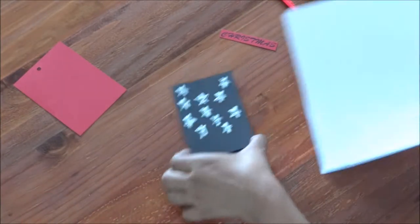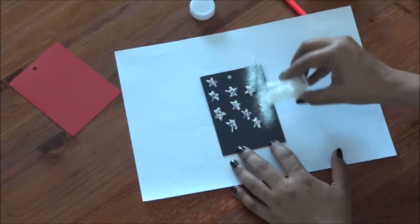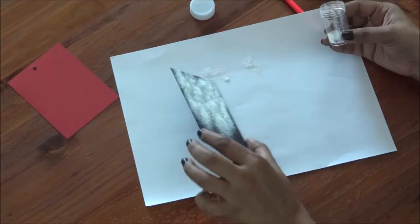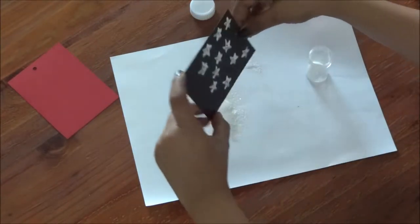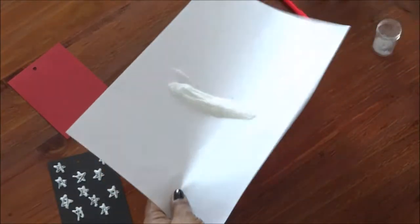Now keep a plain paper so that your glitters don't spread out. Now fill it up with the glitters, remove the extra glitters. See, when you keep a plain paper at the bottom, it's very easy to put the remaining and the extra glitters back in the jar.